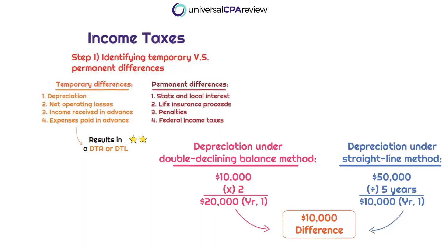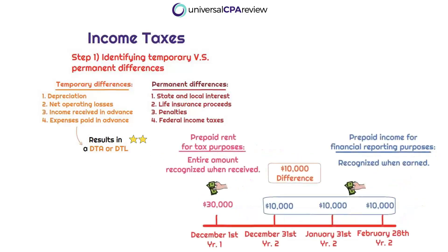The next way that we can have a temporary difference would be if revenues or gains are included in taxable income either before or after they have been included in financial accounting income, aka the income statement. So if unearned revenue is recorded as revenue when cash has been received on the tax return, but it is not getting recognized on the income statement until it is earned, then this would result in a temporary difference. We're recognizing more revenue today on the tax return, but eventually that revenue is going to get recognized on the income statement, and it's already been recognized on the tax return, so it's not going to be recognized twice. Therefore, eventually this will reverse — that's the most important takeaway.